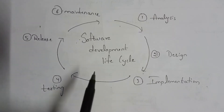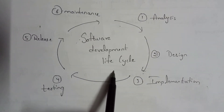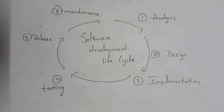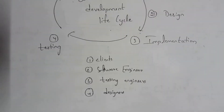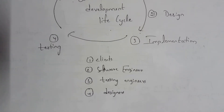Next I will explain the software development life cycle, also called the application development life cycle or program development life cycle. Before starting, you need to know some basics. First, a client is the person who gives a project to a software company. For example, if I want to design a college website and I go to a software company to request it, I am considered the client.